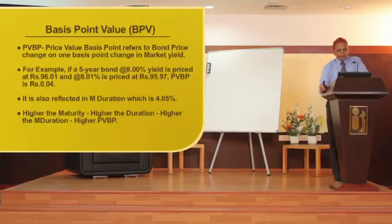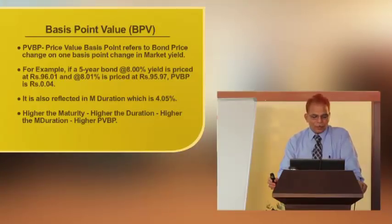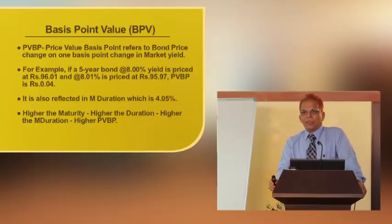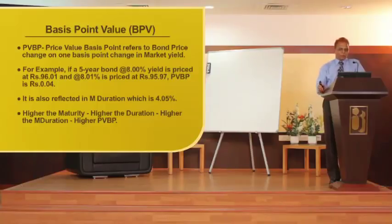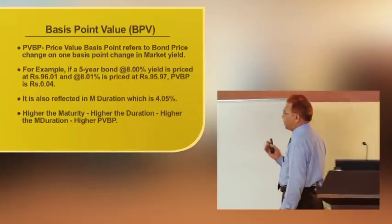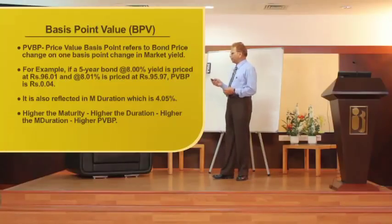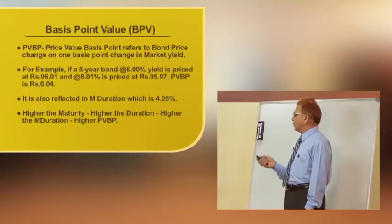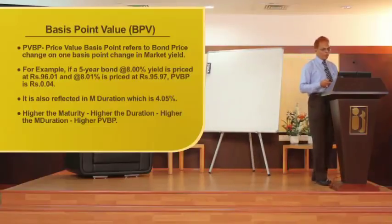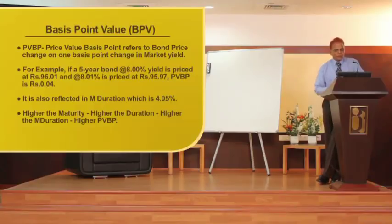The Price Value of a Basis Point is the movement in bond price for one basis point change — here, the difference is 0.04 (96.01 minus 95.97), which is the PVBP. This also indirectly gives the modified duration, since modified duration measures the price sensitivity of the bond. If the interest rate goes up or down by 100 basis points and the modified duration is 4.05, the bond value changes by 4.05%. Higher maturity implies higher duration, higher modified duration, higher volatility, and higher price value basis points.